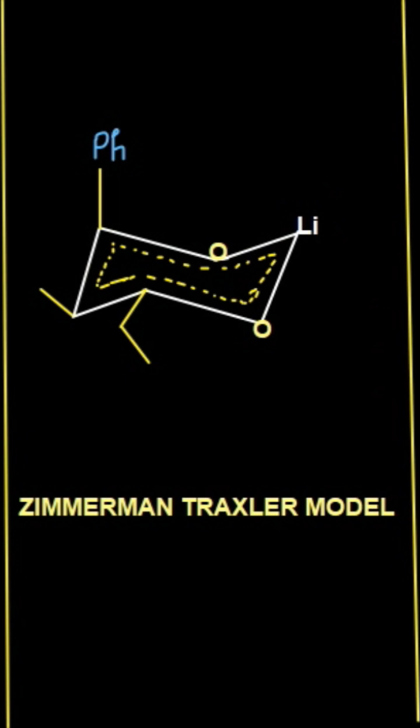If you can see here, you can follow my cursor. This phenyl ring is connected with this carbon, and this is your oxygen. This part is basically your enolate part.